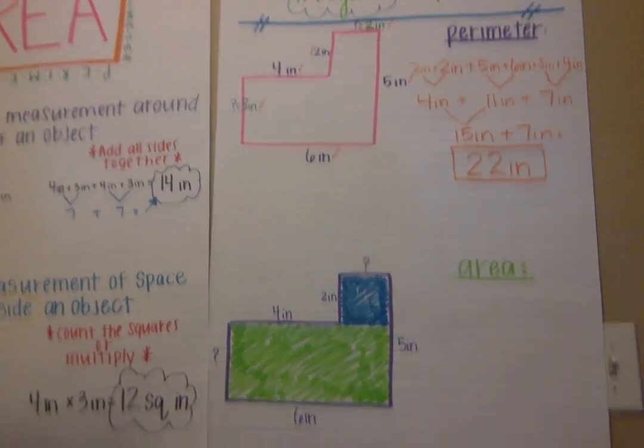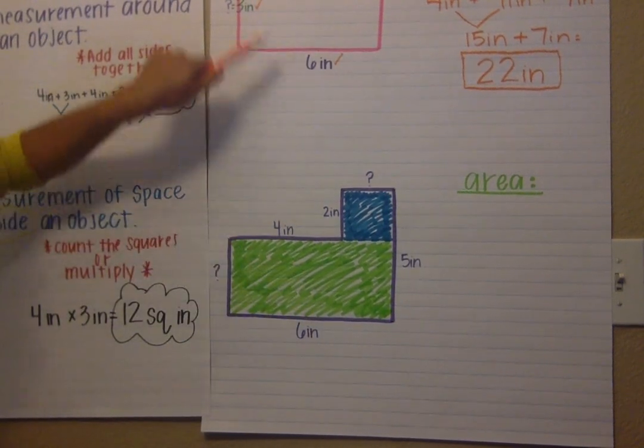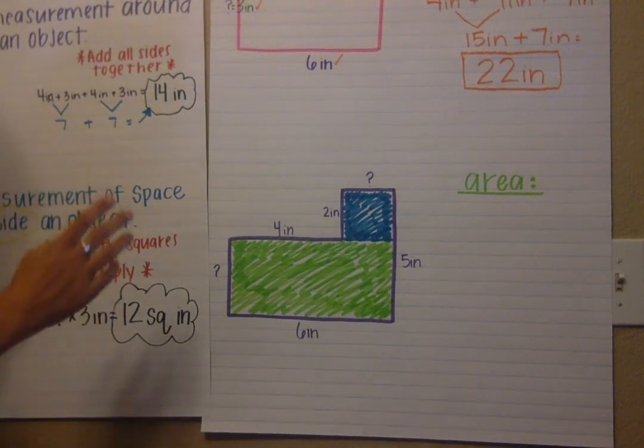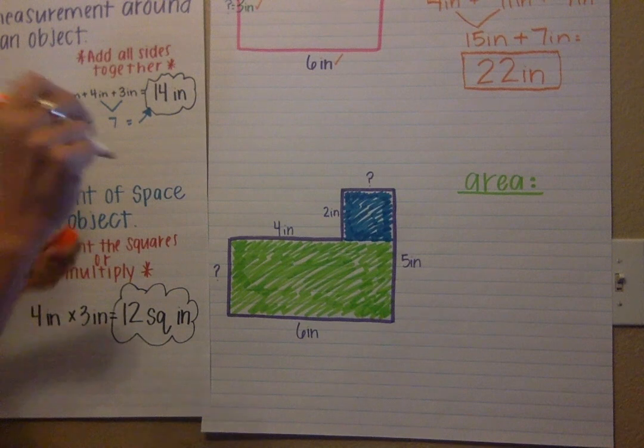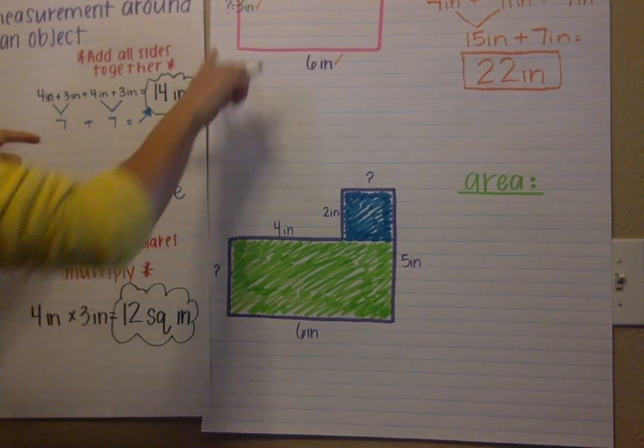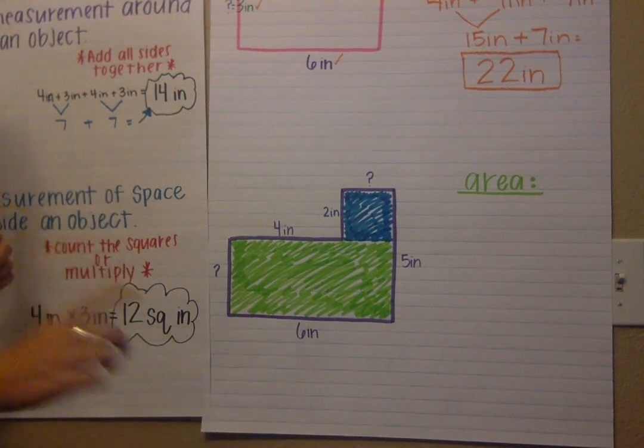Okay so now let's move on to area. This is the same exact shape as the one right above but it looks different because I cut it into two smaller shapes. I'm going to explain why, because in area you need to multiply. When you have irregular shapes you cannot multiply those sides together because you're going to get an area that is not complete.